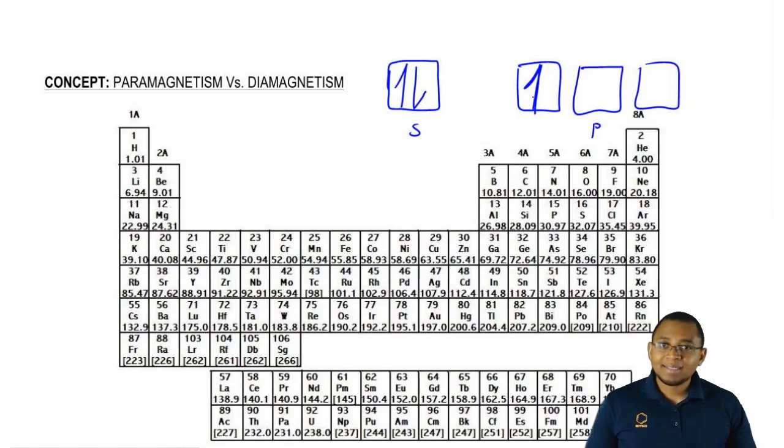If you're diamagnetic, diamagnetic means you have no unpaired electrons at all and therefore, you won't be influenced by any type of magnet.